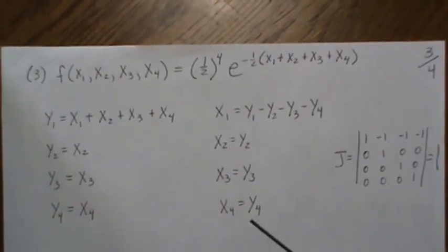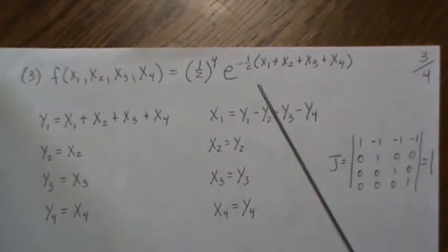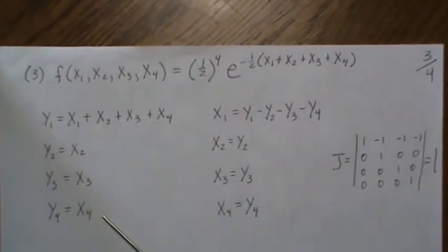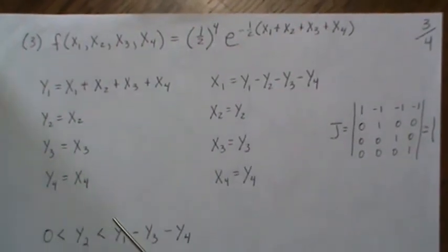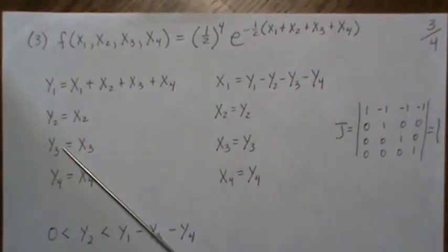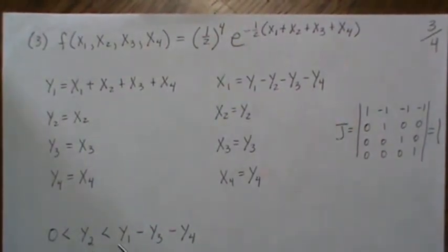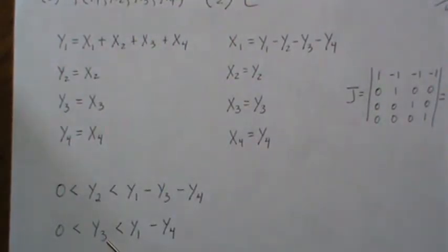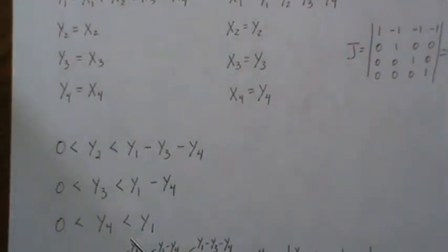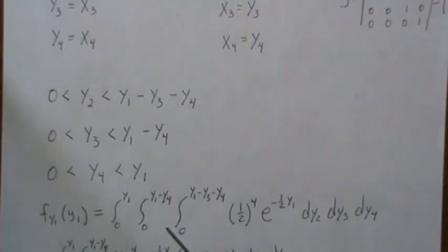Now let's look at summing all four variables — I'll go a little quicker since we've worked through the two- and three-variable cases. Here's the sum of the first four, here's the density for x1, x2, x3, and x4. We introduce the new variables, back-solve for x1, x2, x3, and the Jacobian is one. We know y2 plus y3 plus y4 is less than y1 since we're adding a non-negative constant; subtracting over gives y2 less than or equal to y1 minus y3 minus y4. Similarly, y3 and y4 have to be less than y1, and if you take out y2 and y3 then y4 has to be less than or equal to y1 minus y3.